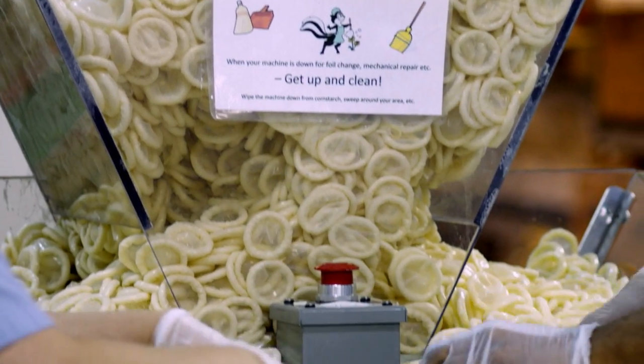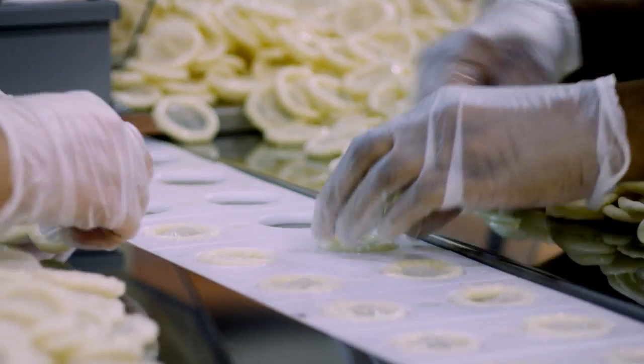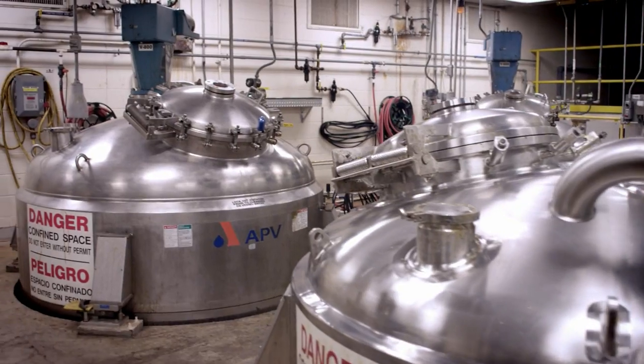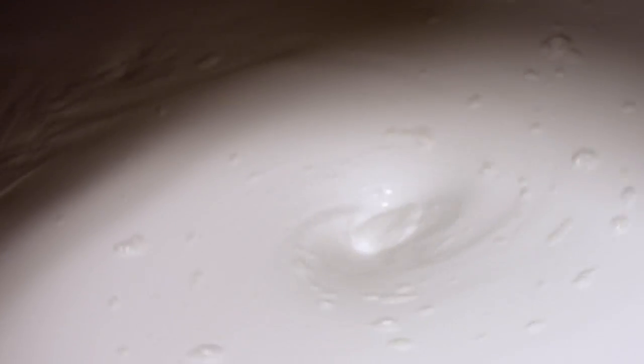If you ever wondered how they came to be called rubbers, it's because most condoms are made from natural latex, a remarkably strong and flexible material that comes from rubber trees.